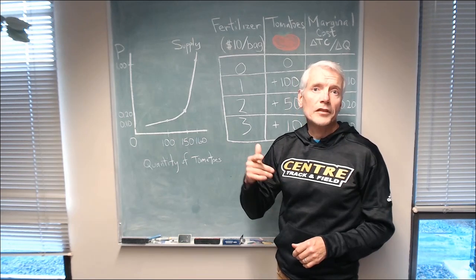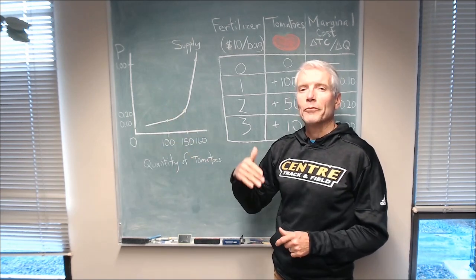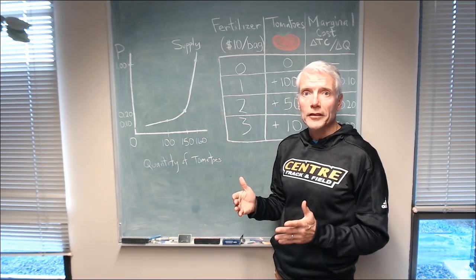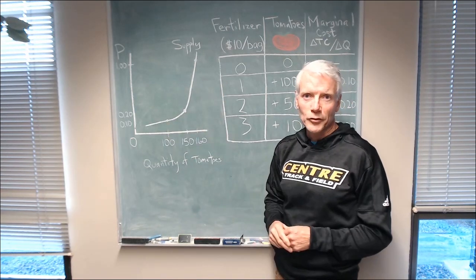For similar reasons, you'll see increasing marginal cost as you add more baristas to a cafe or more assembly lines to a factory, and so those industries will have an upward sloping supply curve as well. Ciao.